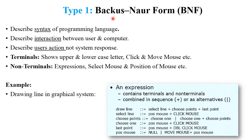The first type is Backus-Naur Form, that is BNF. This model describes the syntax of a programming language. It describes the interaction between the user and the computer, and also describes the user's actions — not the system response. This model is divided into two types: terminals and non-terminals. Terminals analyze specific actions, for example when using Microsoft Word — the particular grammar or syntax automatically given, showing upper and lower case letters, and clicking and moving the mouse button. Non-terminals analyze complete expressions such as selecting the mouse and the position of the mouse.